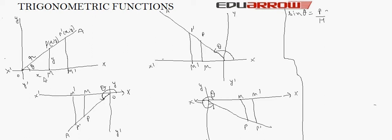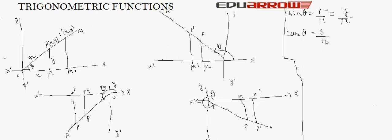From this graph we will compute the various trigonometric ratios. Sin theta is equal to perpendicular upon hypotenuse. Perpendicular is equivalent to y and hypotenuse is R, so sin theta equals y over R. The second ratio is cos theta, which equals base upon hypotenuse — base is x and hypotenuse is R, so cos theta equals x over R.